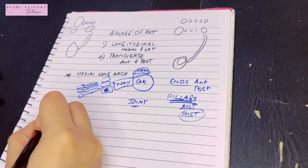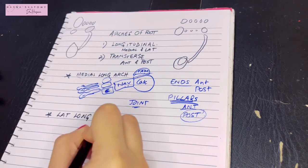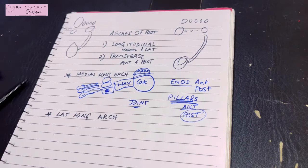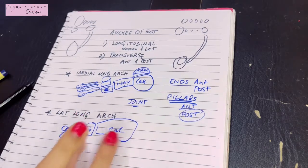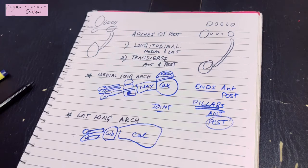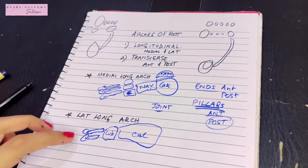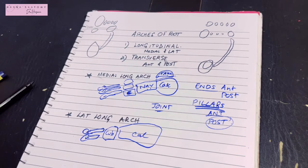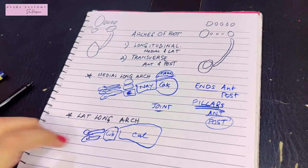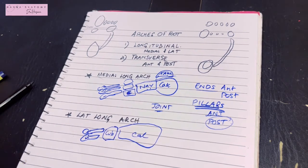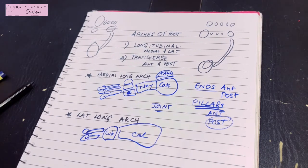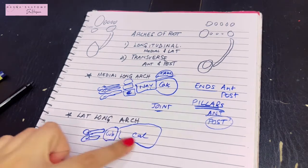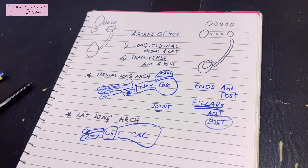The lateral longitudinal arch is quite opposite to the medial one. Viewing the foot from the lateral side, we see the cuboid bone. The anterior end is formed by the heads of the fourth and fifth metatarsal bones, and the posterior end by the lateral tubercle of the calcaneus. The anterior pillar is formed by the metatarsals and cuboid bone, the posterior pillar by the lateral half of the calcaneum, and the main joint is the calcaneo-cuboid joint.